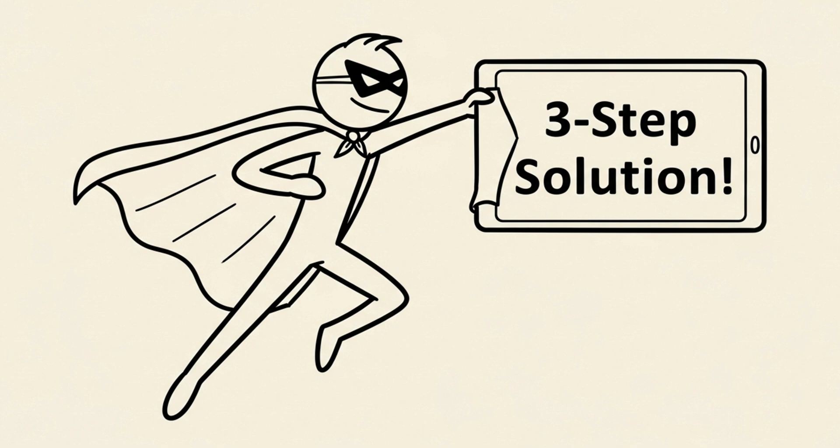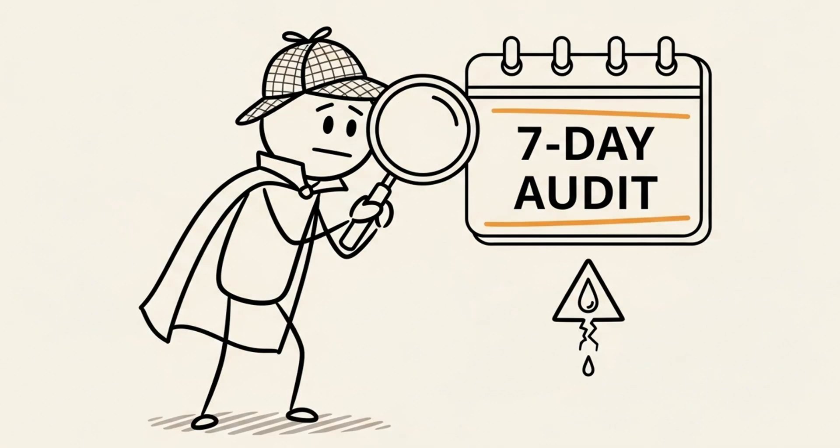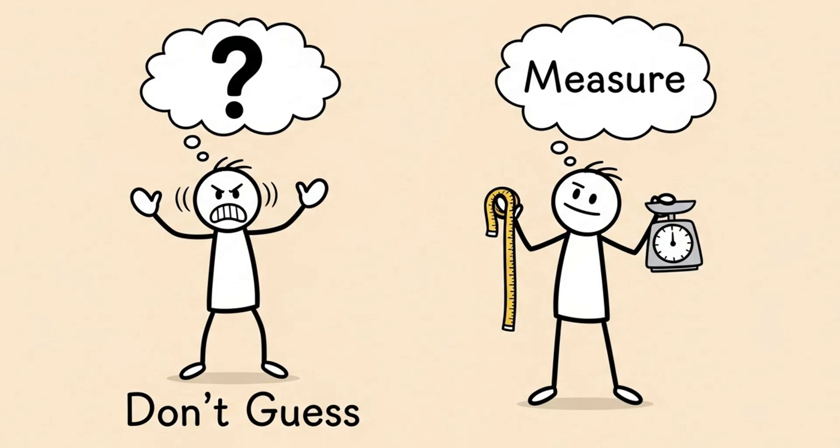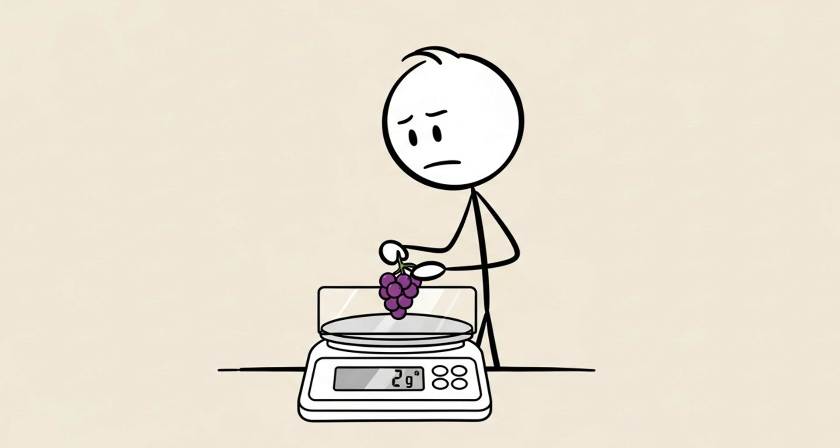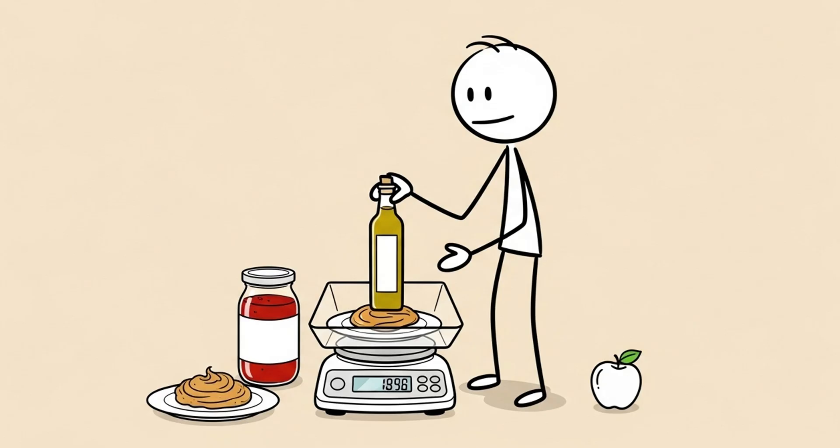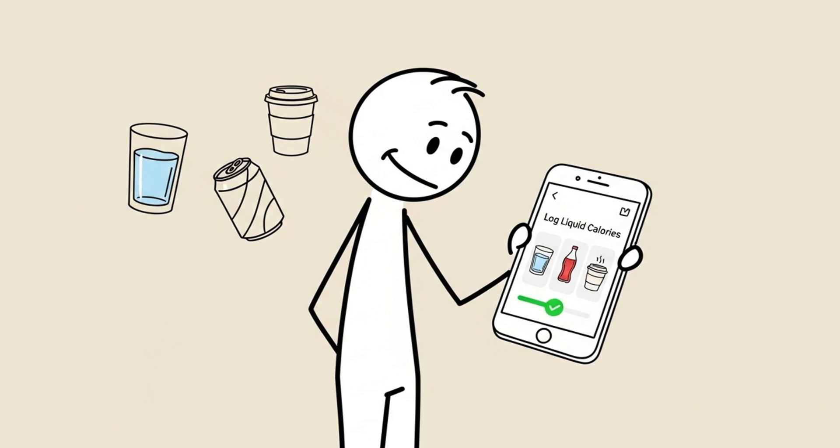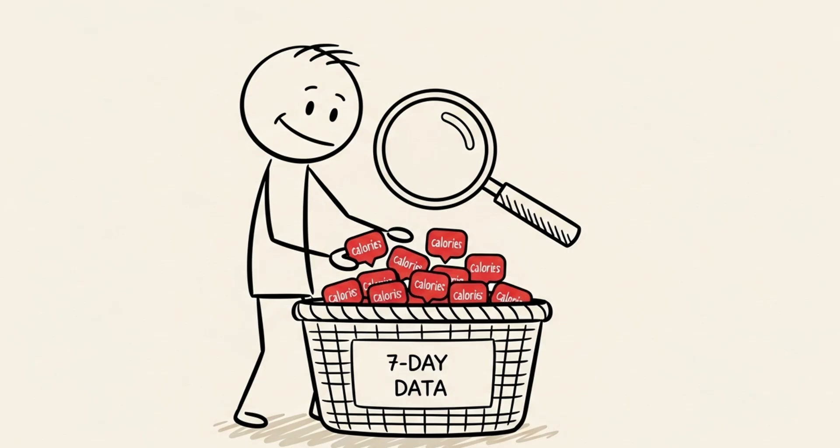So how do we fix this? How do we break the plateau? It's a three-step solution. Step one, the seven-day audit. Find the calorie leak. Don't guess. Measure. For one week, become a meticulous food accountant. Weigh everything with a food scale. Your oils, your sauces, your peanut butter, your fruits. Track your drinks. This isn't forever. This is a seven-day data collection period to find the hidden calories that are erasing your deficit.